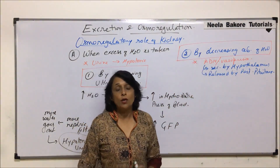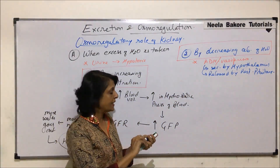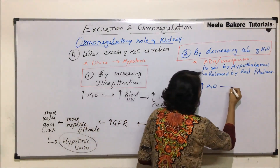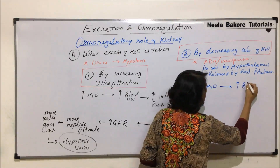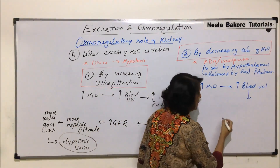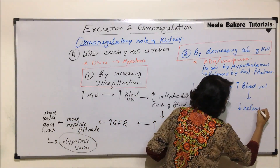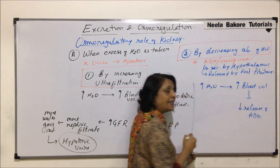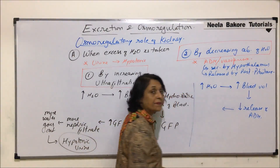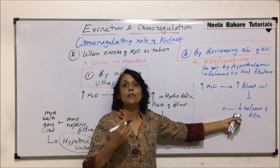When water is in excess, the second method helps in maintaining osmolarity as follows: excess water taken in results in an increase in blood volume. As soon as blood volume increases, this triggers a reduced release of ADH — there is decreased release of ADH from the pituitary.